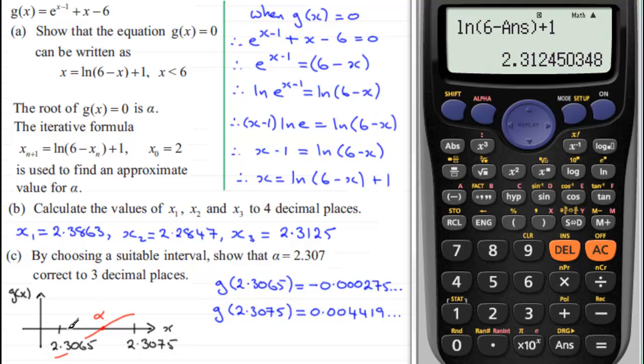So I know that any value in this interval to 3 decimal places is going to be 2.307. So to summarize what I'm going to say is that since there's been a change in sign over that interval, then we know that α must equal 2.307 to 3 decimal places.